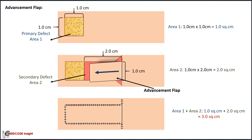The advancement flap moves tissue in a straight line and stretches to close both the primary and secondary defect. When the adjacent tissue transfer closes both defects, add both the size of the primary defect plus the size of the secondary defect to determine the total defect size that is coded. In this case, the total defect area is 3 square centimeters.